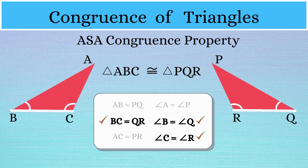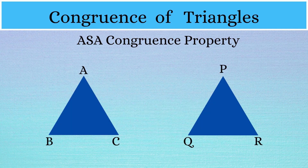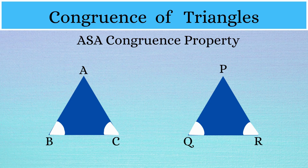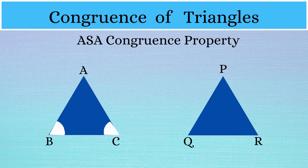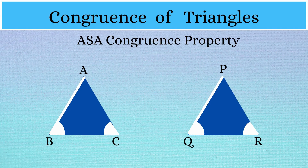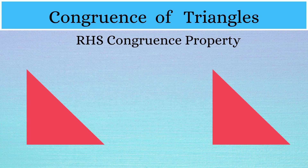This takes us to our final congruence property. But before that, there is a quick question. We just learned that according to the ASA congruence property, we need to verify the equality of two angles and the included side of two triangles. But what would happen if we have any two angles and any one side of one triangle equal to the corresponding two angles and side of another triangle? If you know the answer, type it in the comment section below along with the reason.